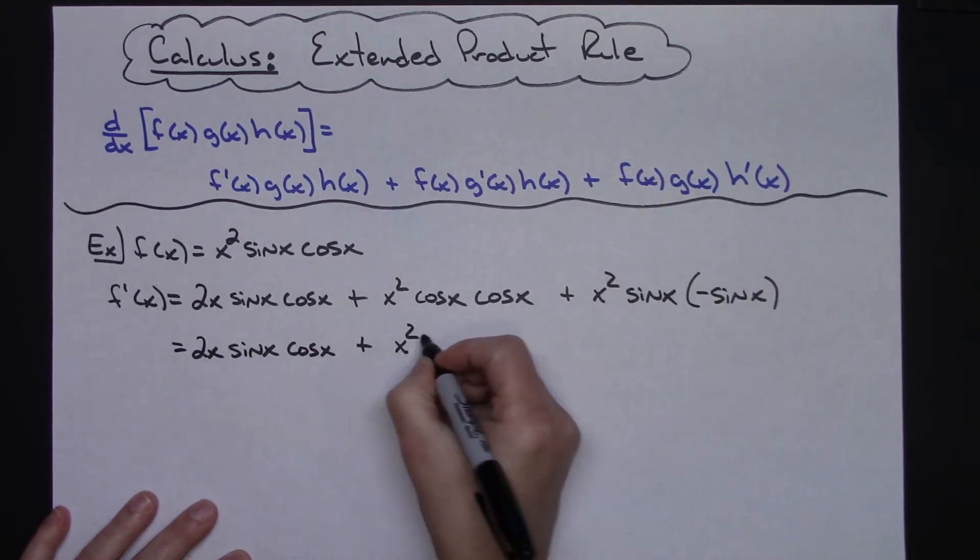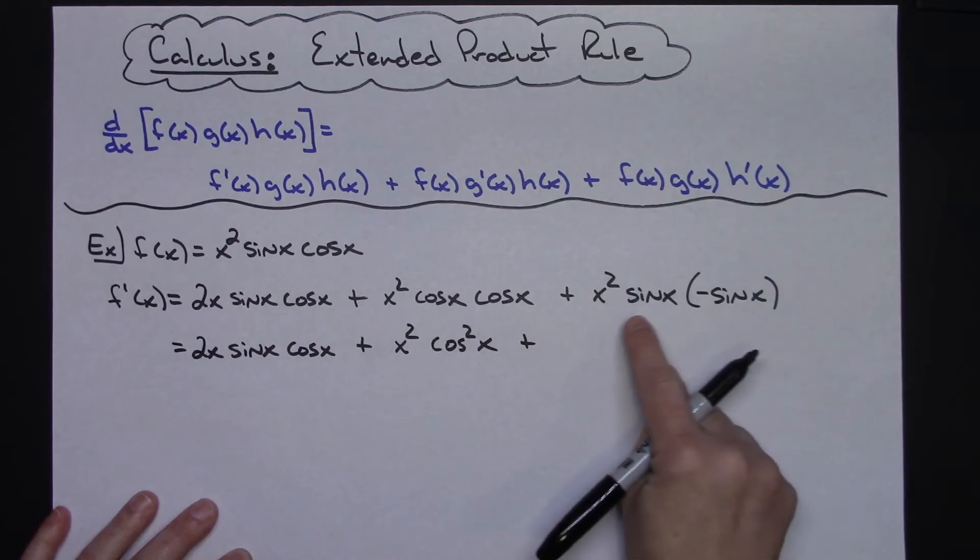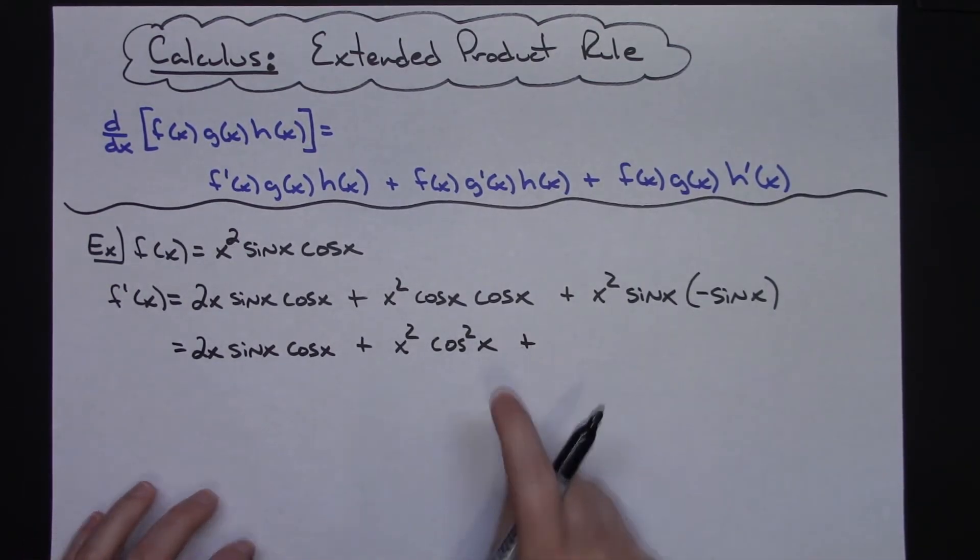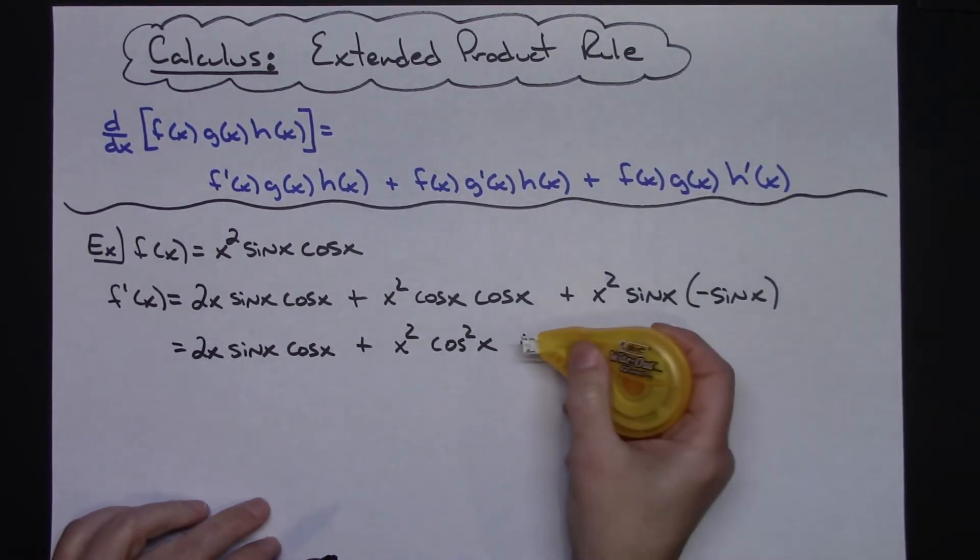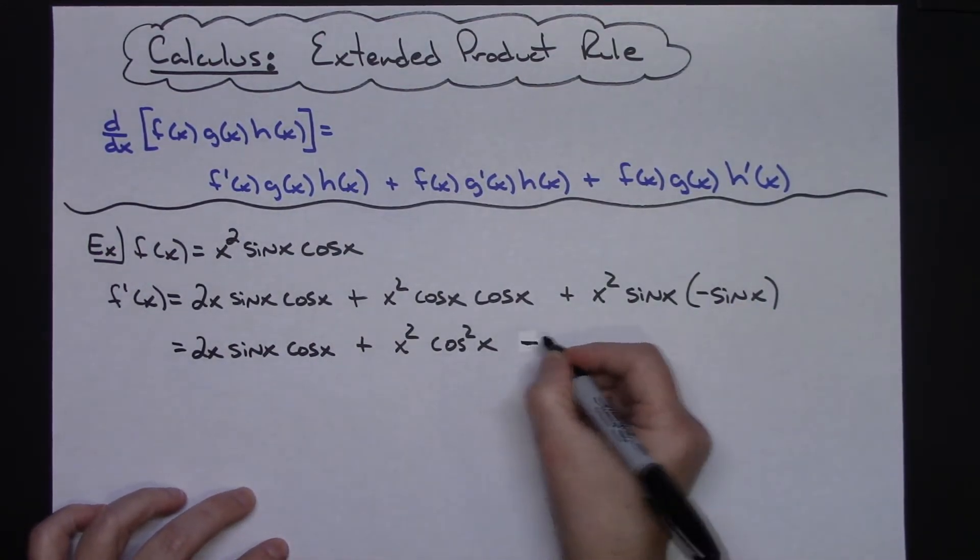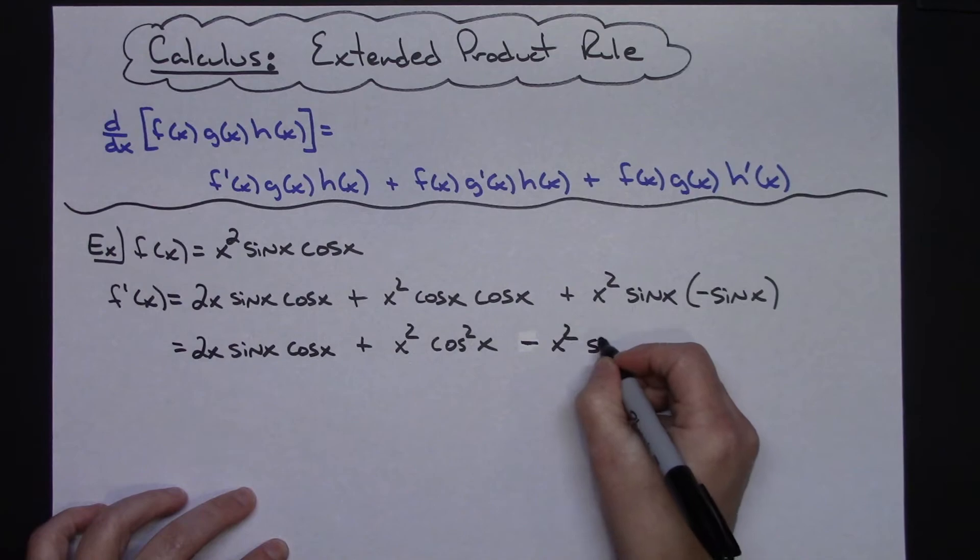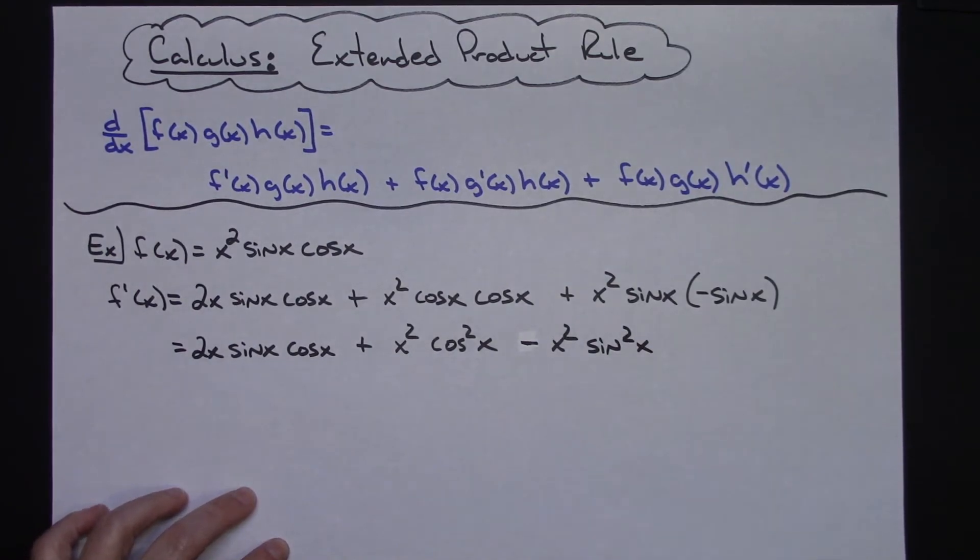On this last one I went ahead and rushed in and put that plus sign there - I think I'm just going to pull it out and make it a minus sign out there in front. So a minus, and then x², and then I've got a sine x and a sine x there so I'll go sin² x on that one.